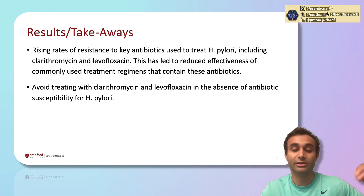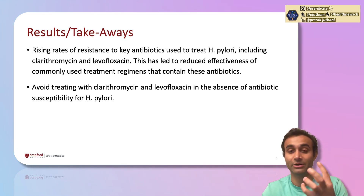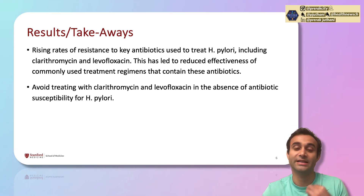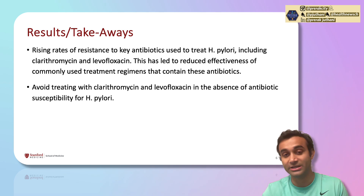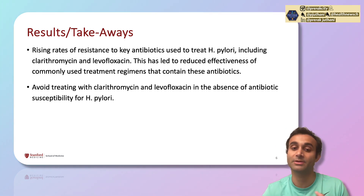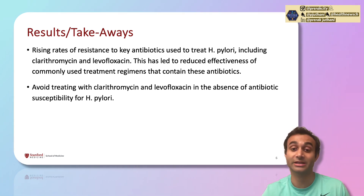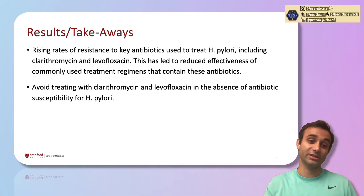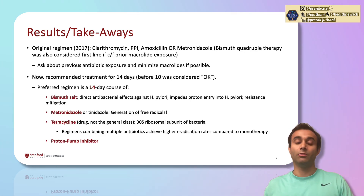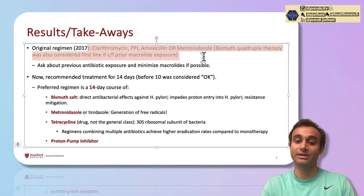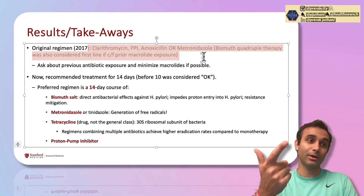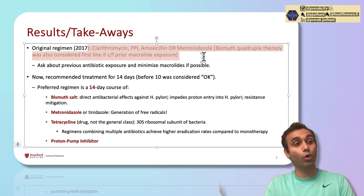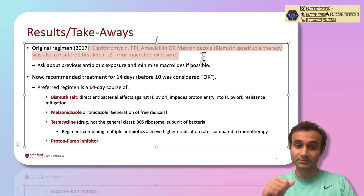H. pylori is a very intense bug that thrives in acidic environments, so we often need multiple antibiotics to get rid of it, and we often also start patients on a PPI. Previously, clarithromycin triple therapy — clarithromycin, a proton pump inhibitor, and amoxicillin or metronidazole — was the recommended regimen in 2017, with bismuth quadruple therapy reserved for cases where clarithromycin resistance was a concern.